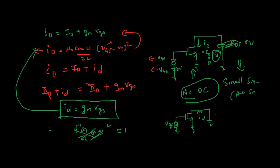Let's label this circuit: gate (G), drain (D), and source (S). Both gate and drain connect to source. Between gate and source there is the small signal voltage vgs, and from drain to source there is a current id flowing equal to gm·vgs. Hence we get a voltage-controlled current source, which is gm·vgs.